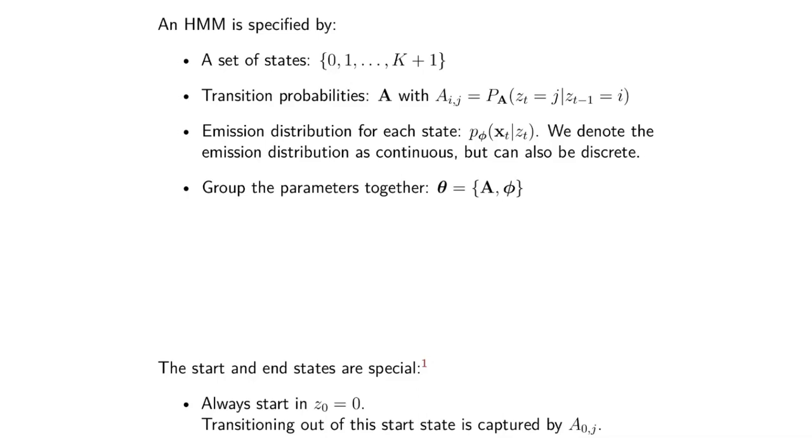Formally, we've got this set of states: state 0, state 1, state 2, up to state K+1. Quick test: what's state 0? Start of sentence. And K+1? End of sentence. If I want to generate from this model, I need to know the probabilities. There are basically two sets of probabilities: the transition probabilities which tell me how to go from one state to another, and the emission distribution or emission probabilities which tell me, given that I'm in a current state, how do I generate something from this state.